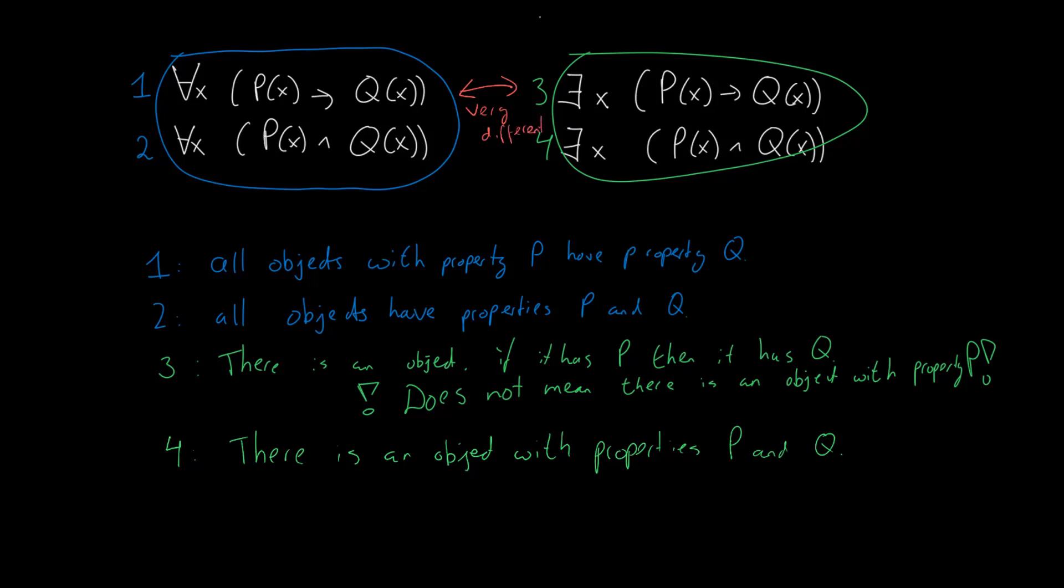Similarly, although this is perhaps less surprising, the implication and conjunction also have very different meanings in both the for all and existential cases. It's only the conjunction which is arguably very similar in both the for all and their exist cases.